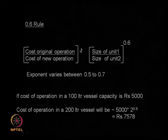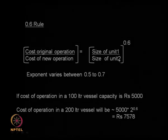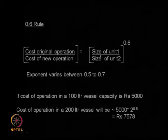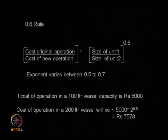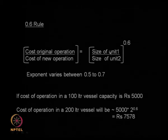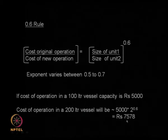Cost of the original operation is directly proportional to the size of the unit raised to the power 0.6. So cost of operation 1 divided by cost of operation 2 equals size of unit 1 divided by size of unit 2, all raised to the power 0.6. For example, if a 100 litre vessel costs 5000 rupees to operate and I have a 200 litre vessel, the cost will not be 2 times 5000, i.e., not 10,000 rupees, but much less. Using the formula: 5000 times 2 raised to the power 0.6, where the 2 comes from 200 divided by 100.